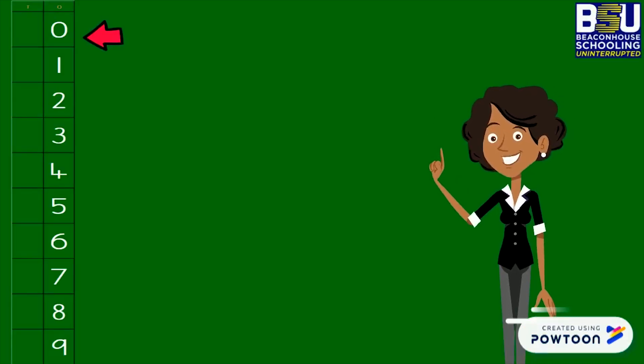Let's count numbers 0 to 30. 0, 1, 2, 3, 4, 5, 6, 7, 8, 9.